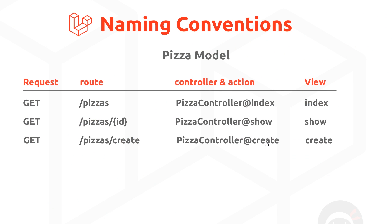Before we go any further with our code, I just want to take a few minutes to talk about naming conventions in Laravel for our models, controllers, methods, and other things. I also want to stress that these are not requirements — you can call your different routes or methods whatever you want in Laravel. These are just a set of conventions that are recommended and used by a lot of programmers, to keep our code files, methods, and routes logical, organized, and easy to understand for ourselves as well as other developers.